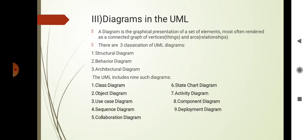Then diagrams in UML. A diagram is a graphical presentation of a set of elements, most often rendered as a connected graph of vertices — meaning things — and arcs — meaning relationships. There are three classifications of UML diagrams: first is structural diagram, second is behavioral diagram, and third is architectural diagram.